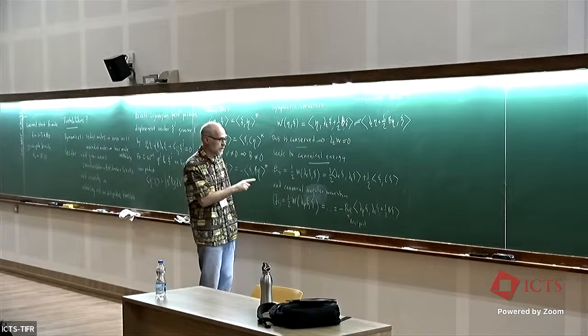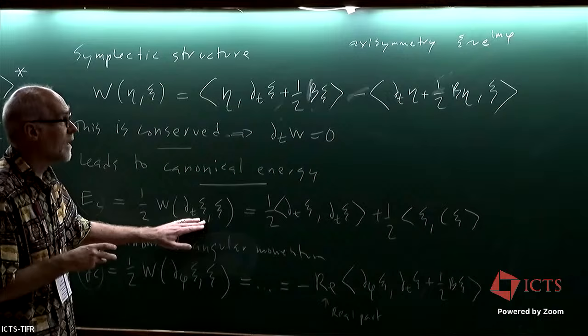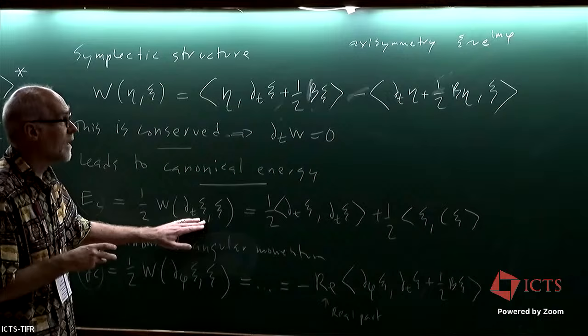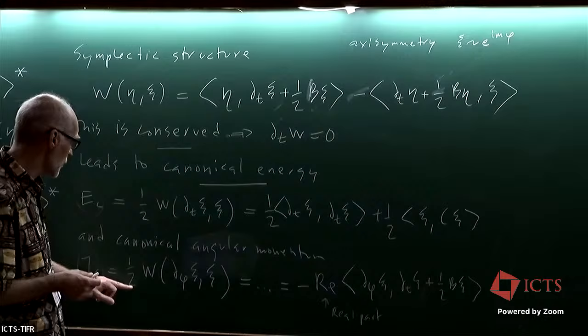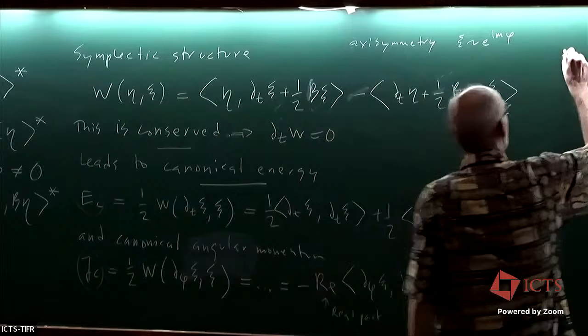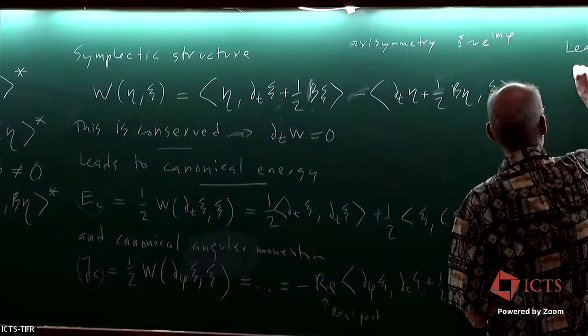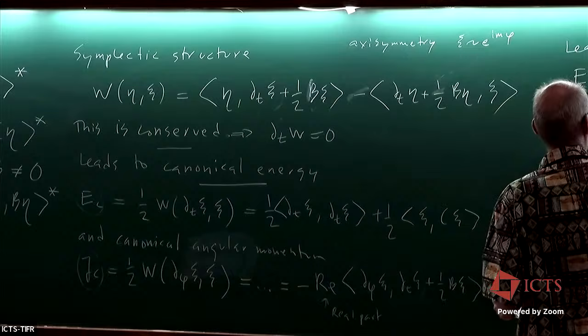Now we make one important observation. If we take modes going like e^{iωt} and e^{imφ}, the time derivative brings out iω and the φ derivative brings out im. These two relations lead us straight to something almost ridiculously simple: Eᶜ has to be minus ω over m times Jᶜ. This is generally true for any radiation — the energy and angular momentum have to be related like this.